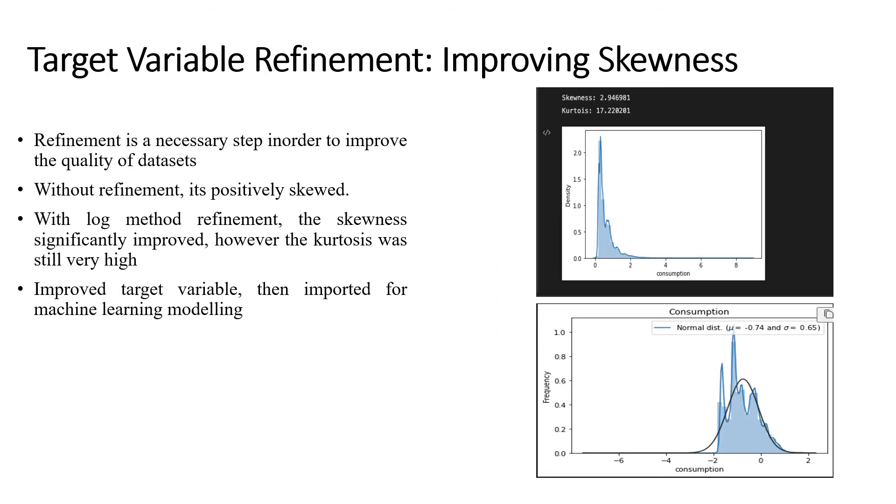So after that we are focusing on refining the target variable consumption. As we can see in the top figure, the normal distribution plot of the consumption data set, we can see that it is not so refined as it is pointing to be a positively skewed data set. So in order to refine this target variable we use the log method refinement which significantly improved the probability distribution curve of the target variable as we can see on the lower side of the figure. So after this refinement the target variable is then imported to the machine learning modeling.